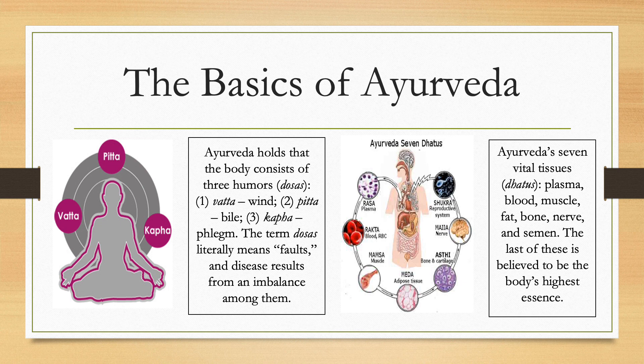Ayurvedic texts stress the idea that there is no single remedy capable of restoring an individual's health — each person's condition had to be studied carefully before prescribing treatment. In terms of treatments, Ayurveda encompasses a wide range of therapies, including herbs, broths, oils and ointments, enemas, massage, douches, sedation — that is, sweating — and surgery.